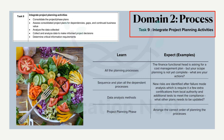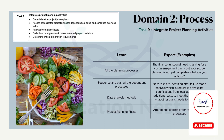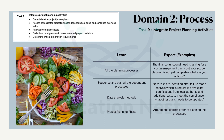Moving on to Domain 2, Task 9: Integrate Project Planning Activities. This is all about bringing together multiple processes and activities that are directly linked to the planning process groups. This task is the biggest task of all — across Domain 1, Domain 2, and Domain 3 — because it is directly linked to the project planning phase. In the PMBOK Guide Sixth Edition, planning is involved in every knowledge area; all 10 knowledge areas have something to plan, resulting in 24 different tasks related to planning.